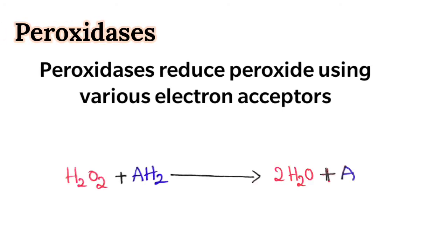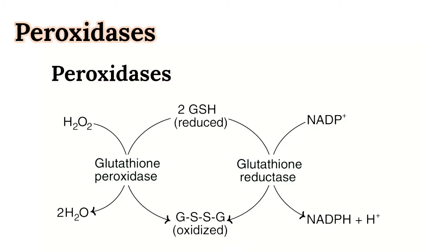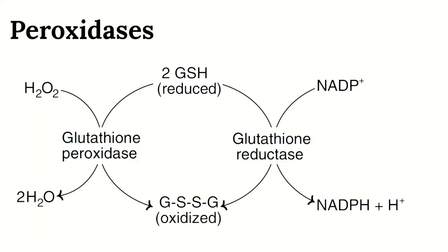In the general reaction, peroxidases reduce peroxides using various electron acceptors. Hydrogen peroxide is converted into water, thereby detoxifying it. Peroxidases are found in milk, leukocytes, platelets, and tissues involved in eicosanoid metabolism. They reduce hydrogen peroxide at the expense of electron donors such as vitamin C, quinones, and cytochrome C. An example is glutathione peroxidase, which protects erythrocytes by catalyzing the destruction of hydrogen peroxide through the conversion of reduced glutathione (GSH) to oxidized glutathione (GSSG).